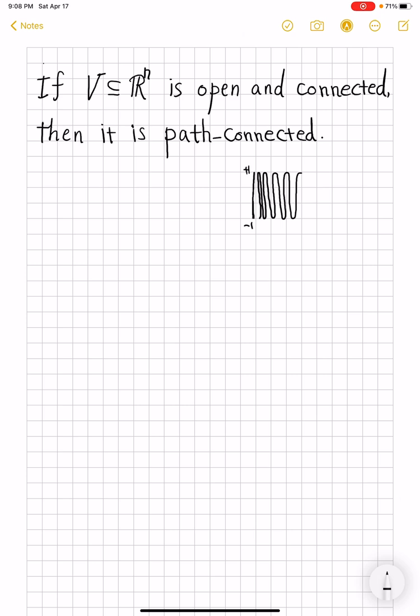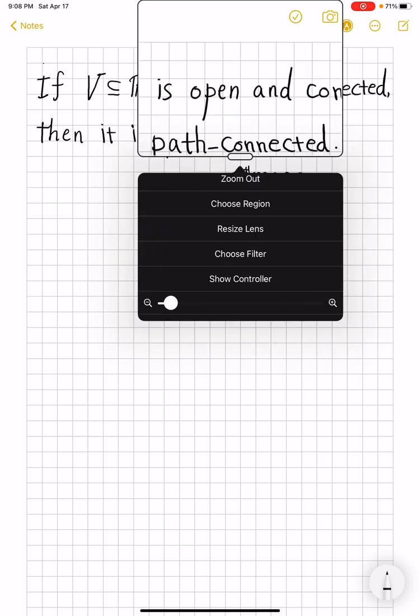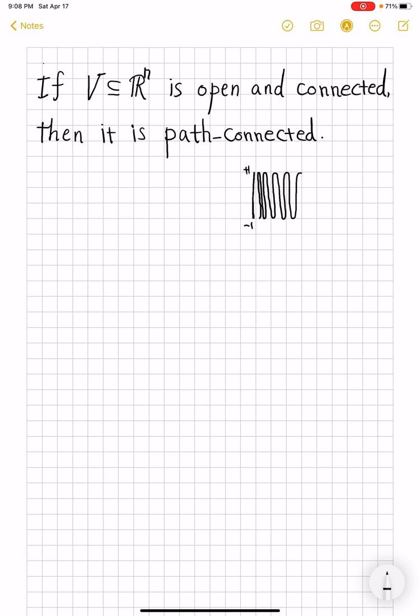So union of these is a connected set that is not path connected. Both of these claims require rigorous proofs, and I won't get into those details in this video at least. But let's see how openness actually ends up helping to prove this.